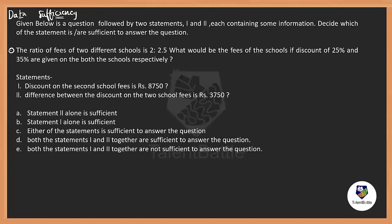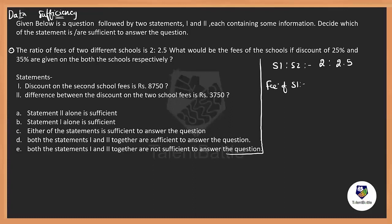From the given data, School 1 fee : School 2 fee = 2 : 2.5. So let fee of School 1 = 2x and fee of School 2 = 2.5x. To find the actual fees, I need the value of x. The question also tells us that the discount on School 1 is 25% and on School 2 is 35%.